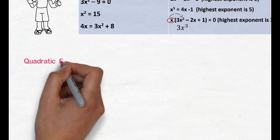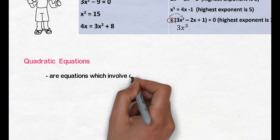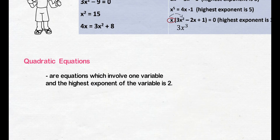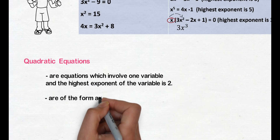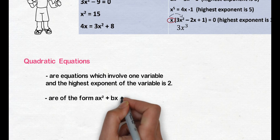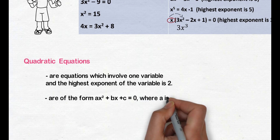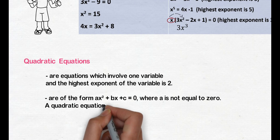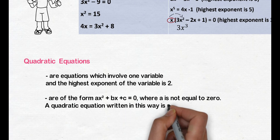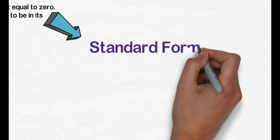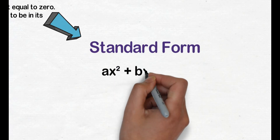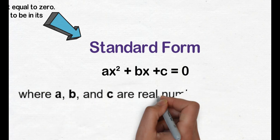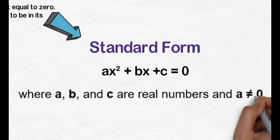Again, quadratic equations are equations which involve one variable, and the highest exponent of the variable is 2. Quadratic equations are of the form ax squared plus bx plus c equals 0, where a is not equal to 0. A quadratic equation written in this way is said to be in its standard form: ax squared plus bx plus c equals 0, where a, b, and c are real numbers and a is not equal to 0.